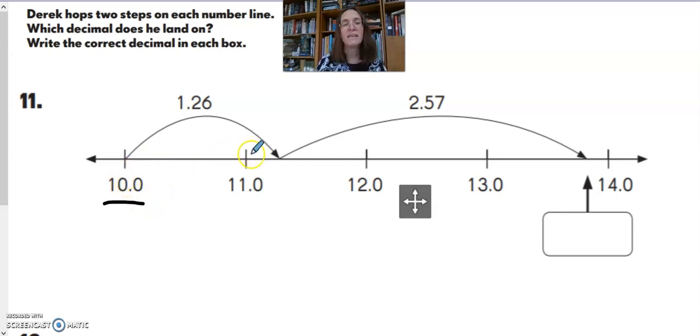It goes 10, 11, 12, 13. And then he measured his hops. So he started at 10 and went 1 and 26 hundredths here. Then he had a much bigger hop where he went 2 and 57 hundredths.